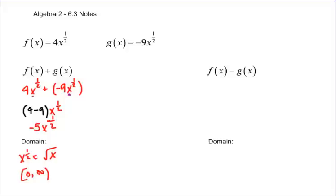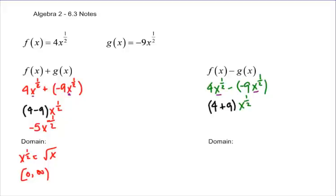When subtracting, you take the exact same steps: 4x to the 1/2 minus negative 9x to the 1/2. These are like terms because both have x to the 1/2, so we get 4 plus 9 times x to the 1/2, which is 13x to the 1/2. Keep in mind that x to the 1/2 is the square root of x, and the domain is all positive numbers plus 0 — so from 0 to infinity.